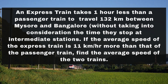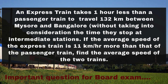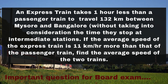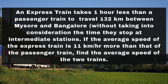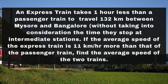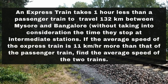An express train takes one hour less than a passenger train to travel 132 kilometers between Mysore and Bangalore. If the average speed of the express train is 11 kilometers per hour more than that of the passenger train, find the average speed of the two trains.